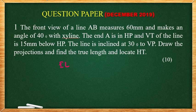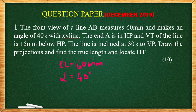Elevation EL is equal to 60 mm and makes an angle of 40 degree with XY line. That means, alpha is equal to 40 degree. Apparent inclination with HP and alpha is equal to 40 degree.